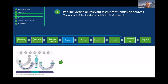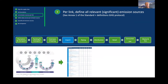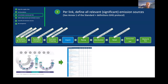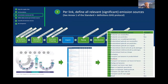The second step is that per supply chain link, you define all the relevant or significant emission sources. You can use the greenhouse gas protocol as a starting point. We have converted this into a checklist in our standard that gives a full overview of all possible emissions. For every supply chain link, you identify which emission sources are relevant and contributing to greenhouse gas emissions. Altogether, you create an inventory of emission sources and decide whether they are significant enough.